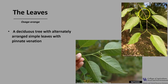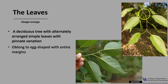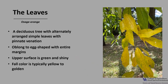Osage Orange is a deciduous tree with alternately arranged simple leaves that are pinnately veined, with veins radiating on both sides from one midrib out to the end of the leaf, as you can see in the photo. They are oblong to egg-shaped with entire or smooth margins. The upper surface is green and shiny, and in fall the color is typically golden to yellow.